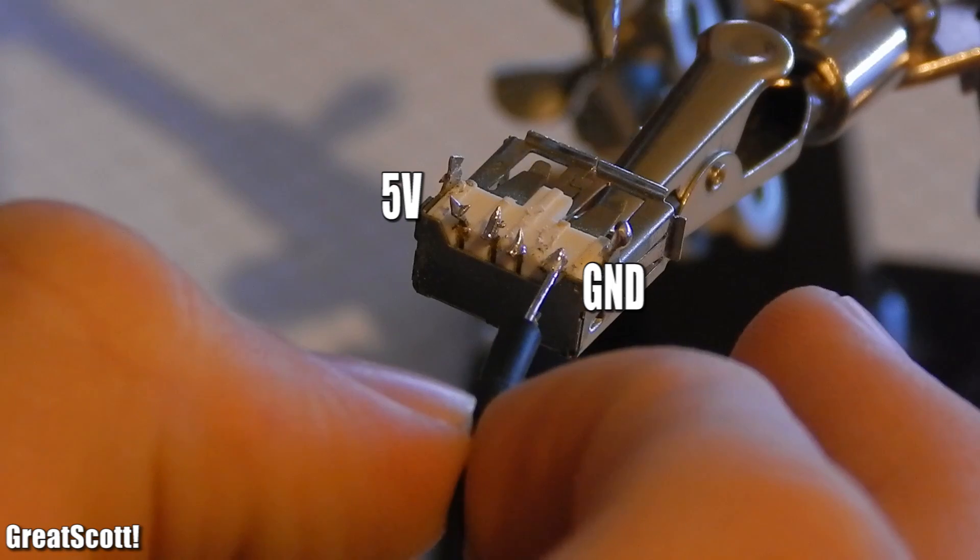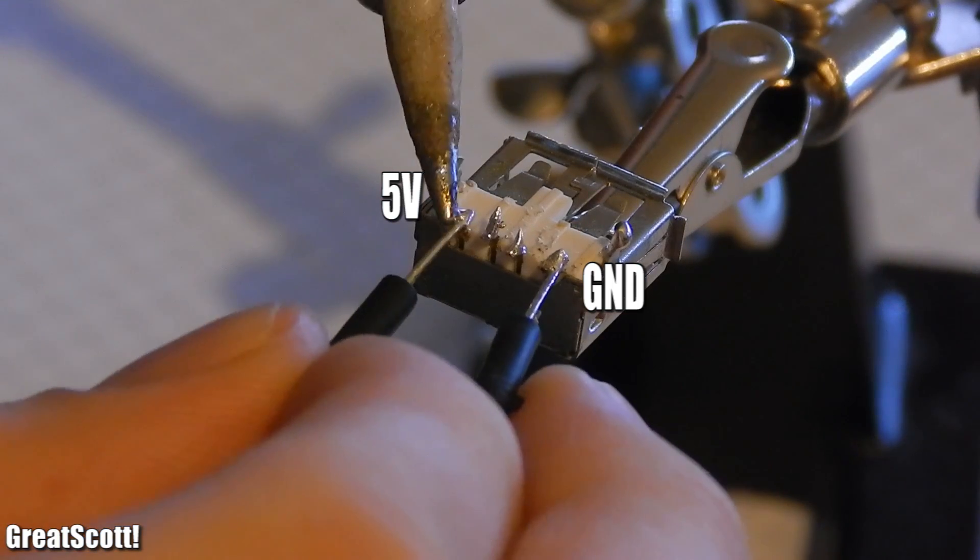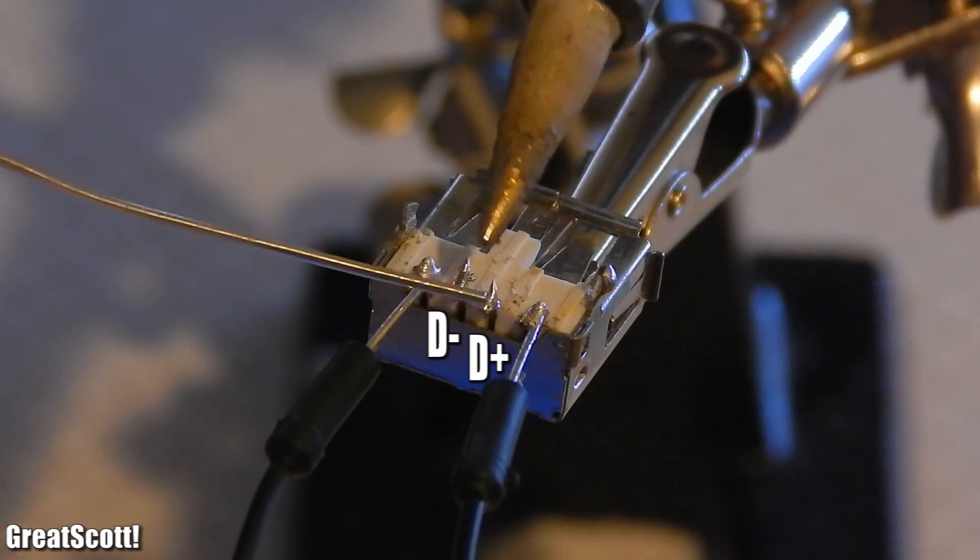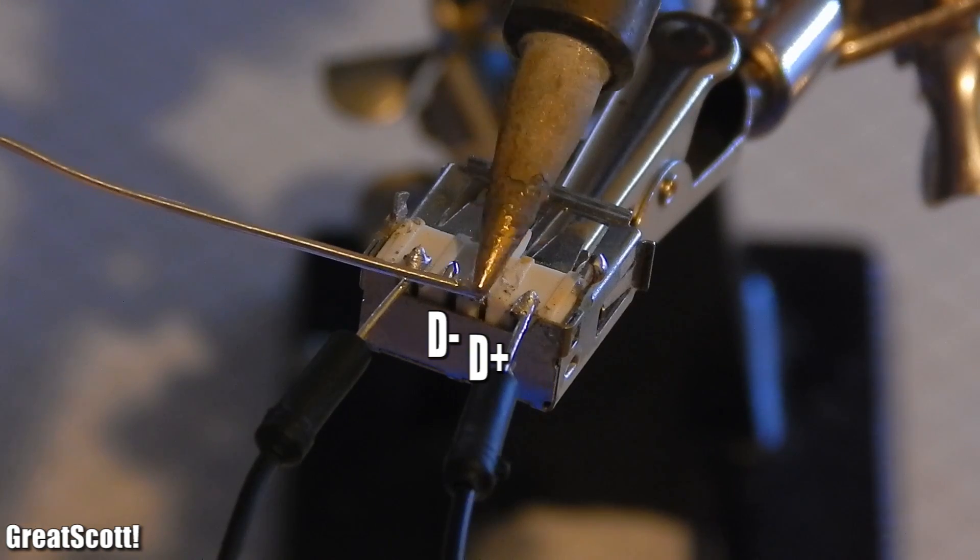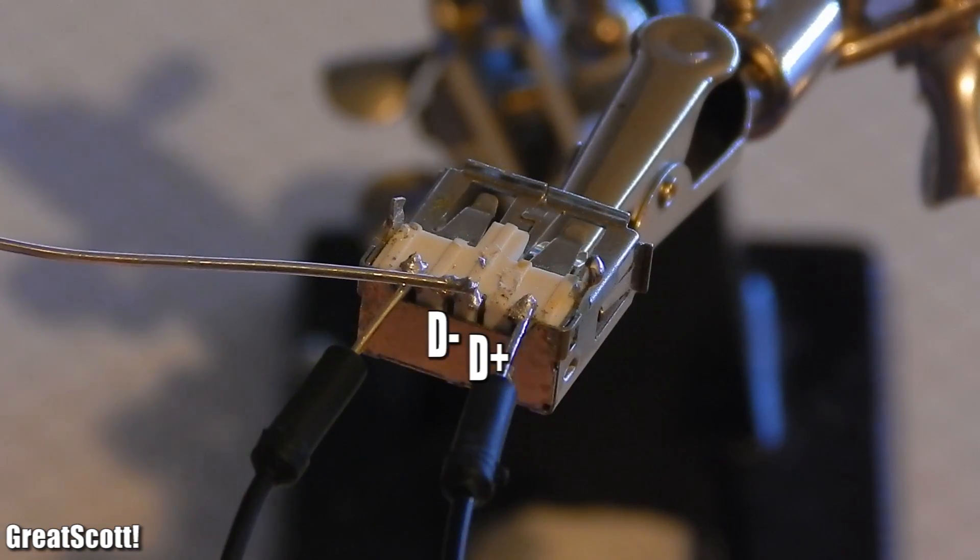For testing purposes I soldered one wire to the ground pin on the right, and another wire to the 5V pin on the left. Afterwards we have to short the data pins in the middle using solder or a short piece of wire. The phone is going to charge the fastest with the pins shorted out.